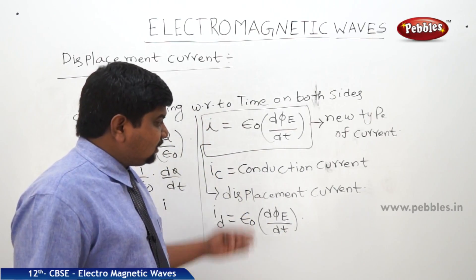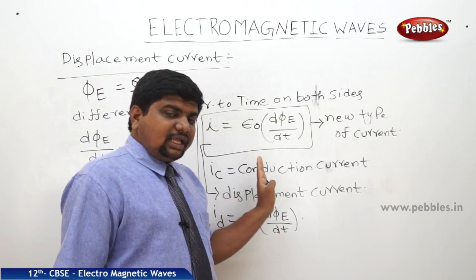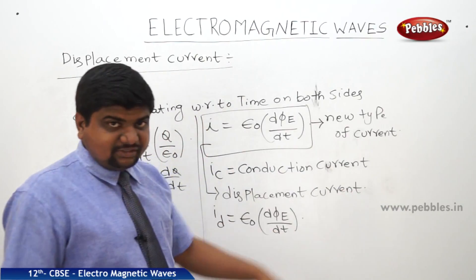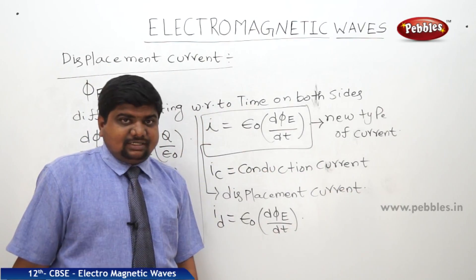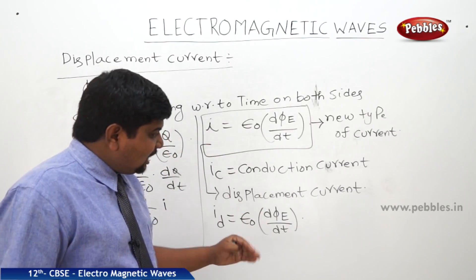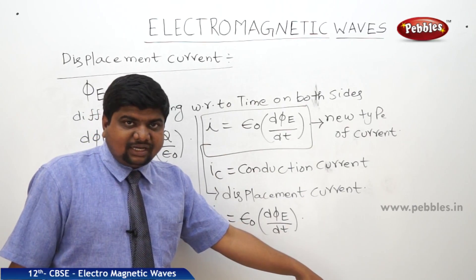Conduction current means the current, if the electrons are flowing from one type of charged space to another type of charged space, means positive to negative terminal. That is said to be conduction current. Current is developed due to the conduction of the charge carriers. What is displacement current? The amount of current which is converting to magnetic field.